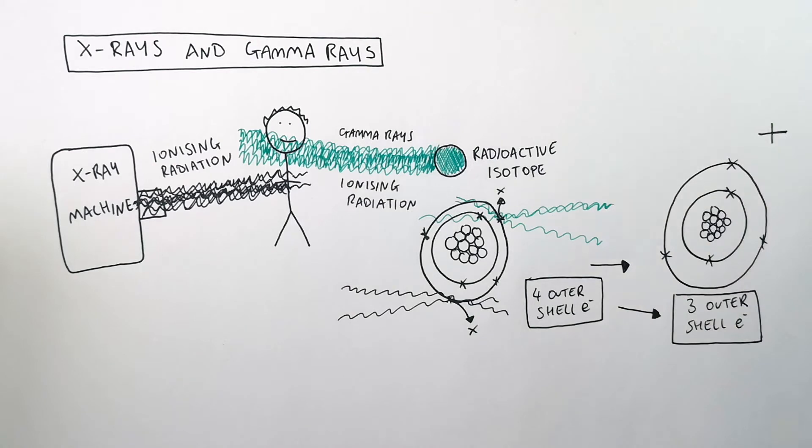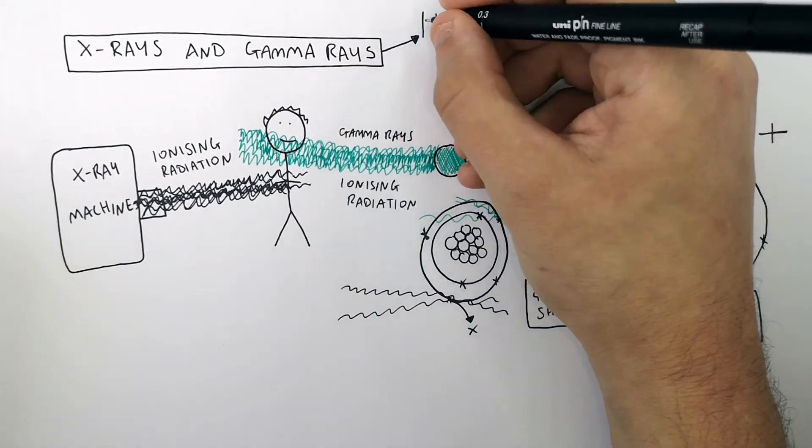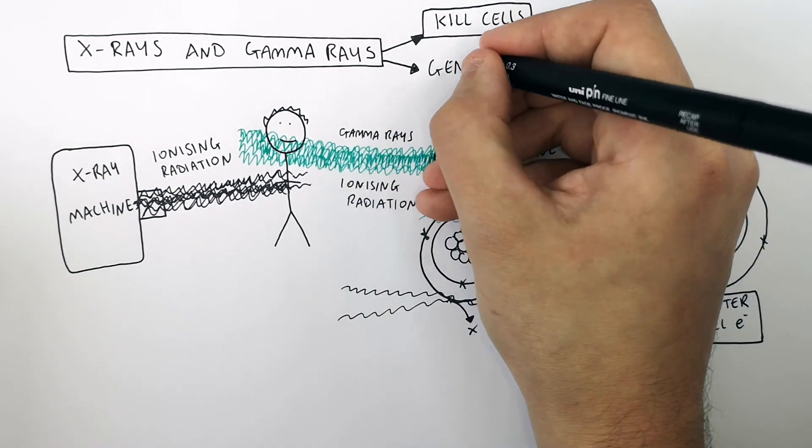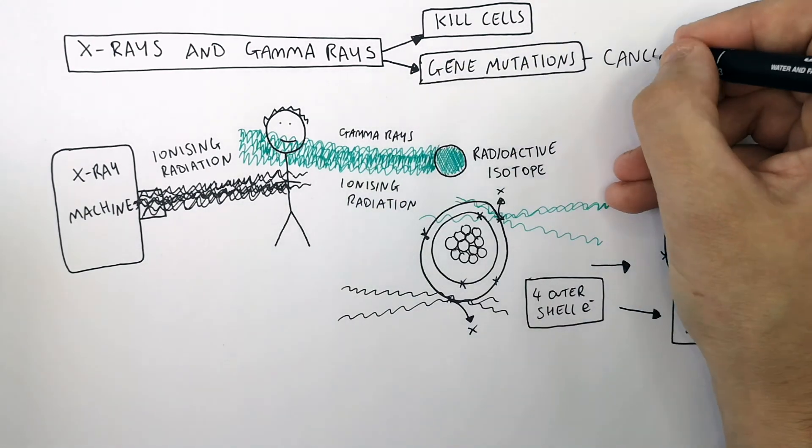That can be a problem because now you've got charged ions in your body. X-rays and gamma rays are dangerous because they can kill your cells. They can also affect your DNA and cause gene mutations. These gene mutations can potentially increase the risk of cancer.